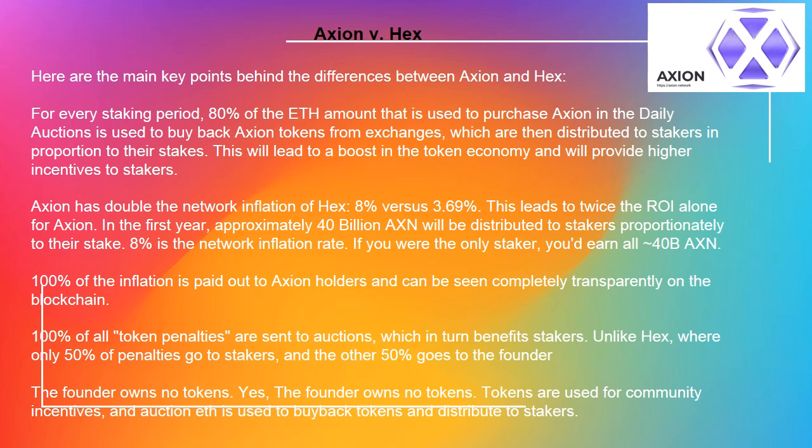Axion has double the network inflation of HEX, 8% versus 3.69%. This leads to twice the ROI for Axion. In the first year, approximately 40 billion AXN will be distributed to stakers proportionately to their stake. 8% is the network inflation rate. If you were the only staker, you'd earn all 40 billion AXN. 100% of the inflation is paid out to Axion holders and can be seen completely transparently on the blockchain.